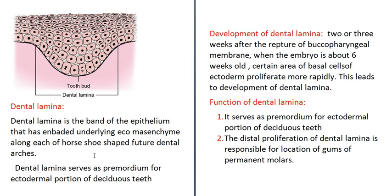Dental lamina is the band of epithelium that has invaded the underlying ectomesenchyme along each of the horseshoe-shaped future dental areas. Dental lamina serves as the primordial for the ectodermal portion of this dual state.